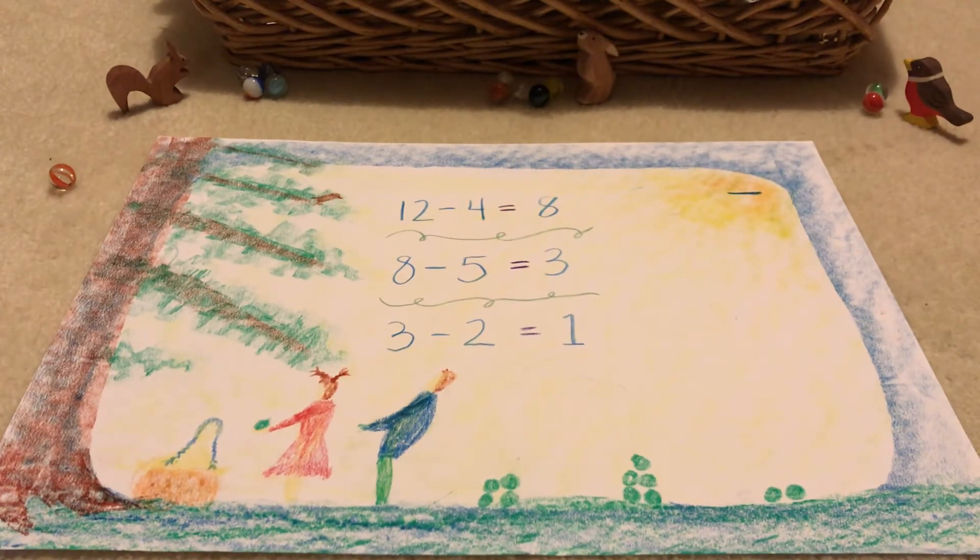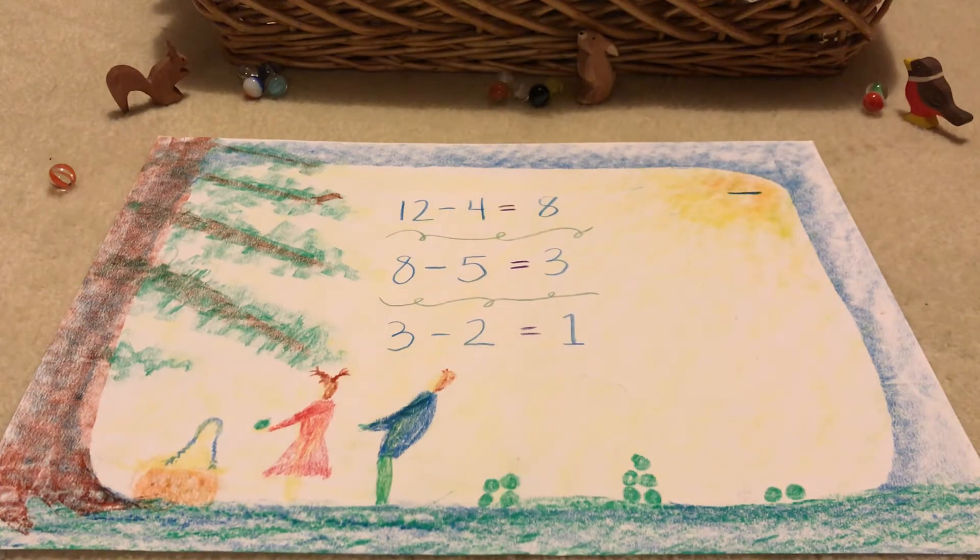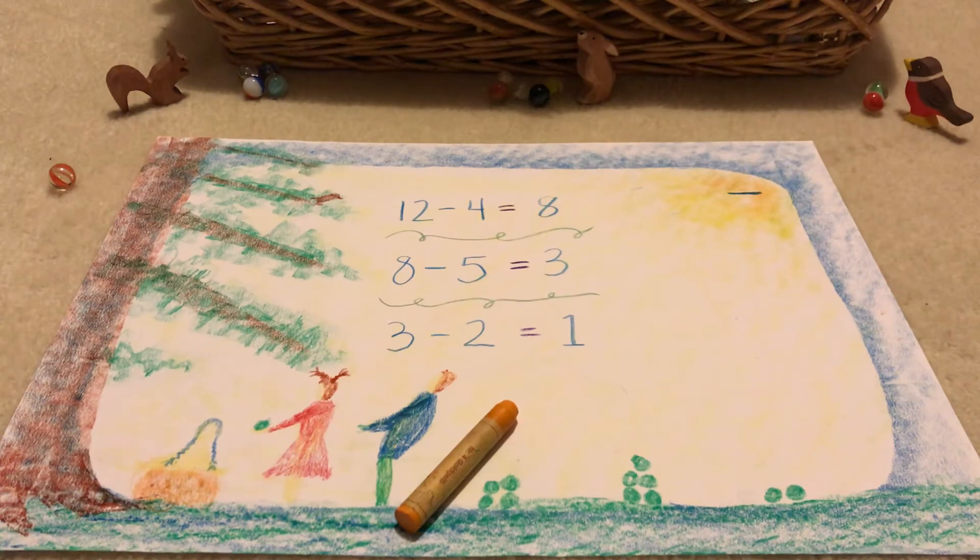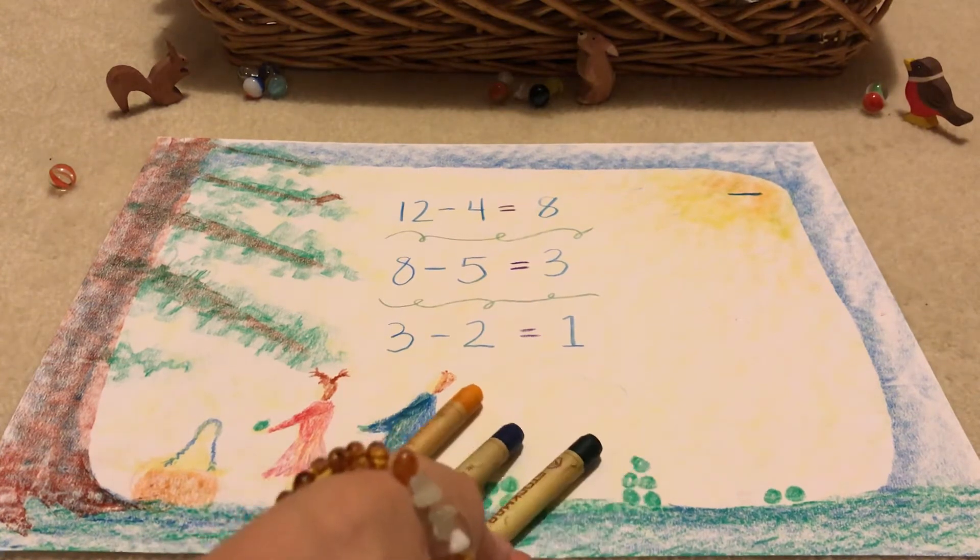So for Willow and Ollie, start here with—I'm using golden yellow—and let's see, of course Ollie has blue and green, and I'm using stick crayons here.